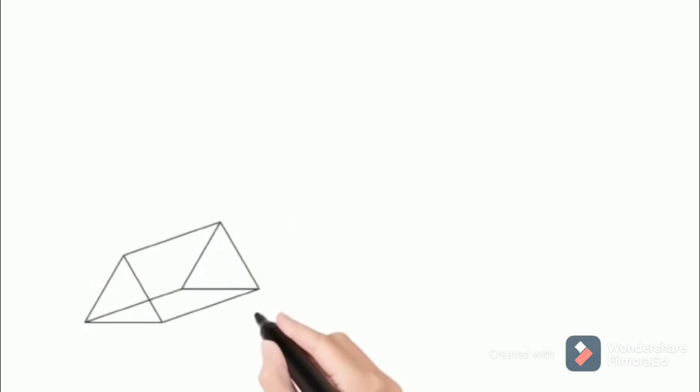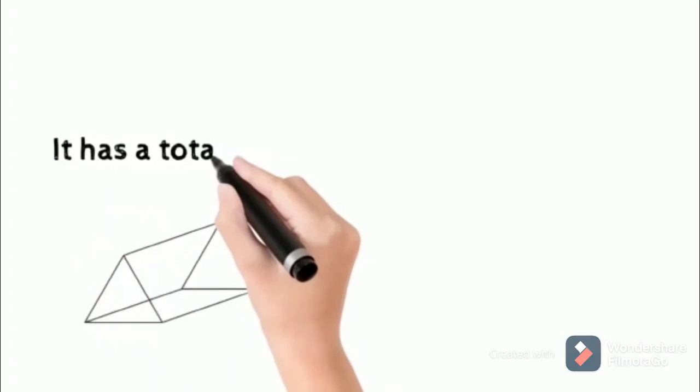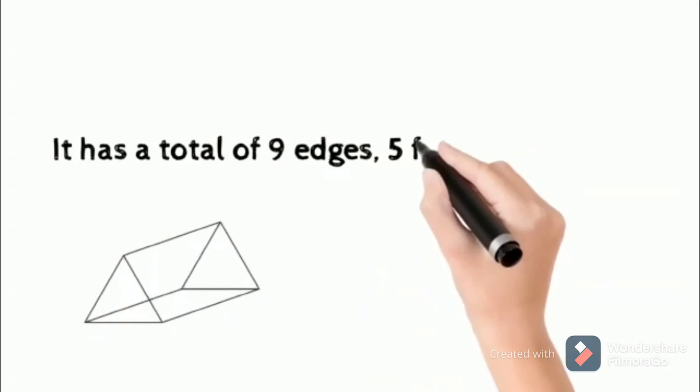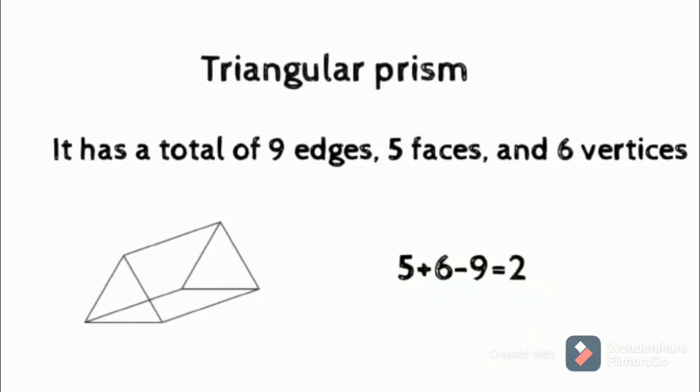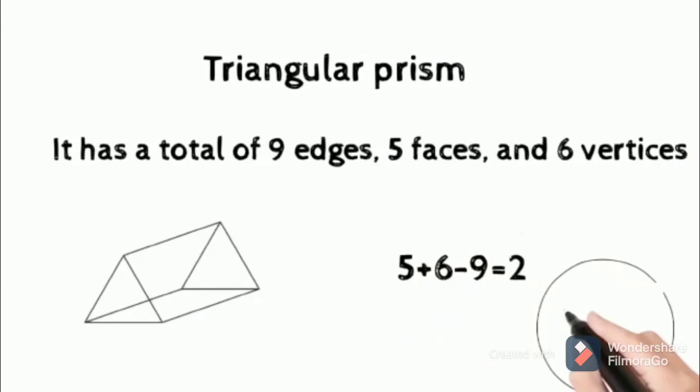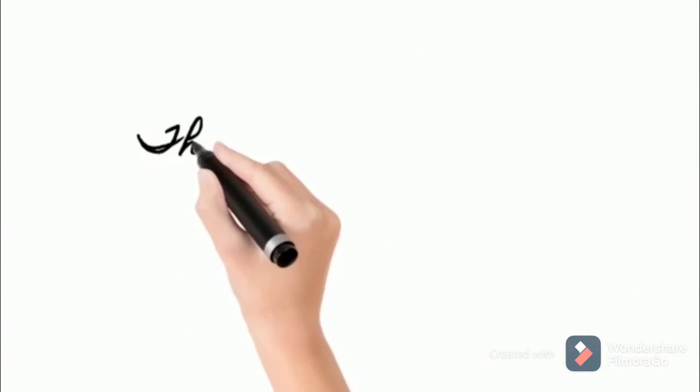Now we will look at another figure, the triangular prism. It has a total of nine edges and five faces. After doing the calculations, you will get 2. The formula has again prevailed—we can see that Euler's formula holds true.